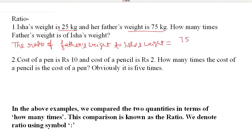We find the ratio of father's weight to Isha's weight. Father's weight is 75 and Isha's weight is 25. Simplifying: 75 upon 25 equals 3 upon 1. So we can say that Isha's father's weight is 3 times Isha's weight.